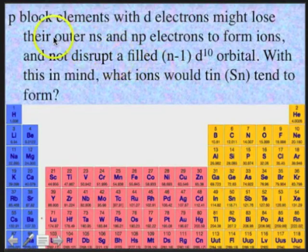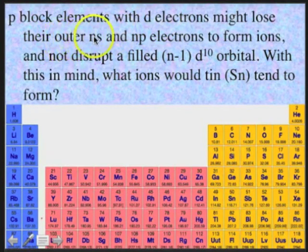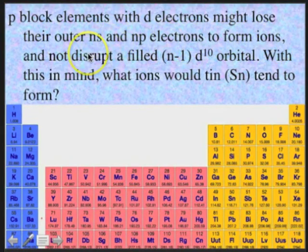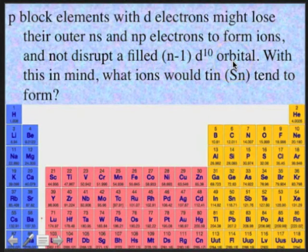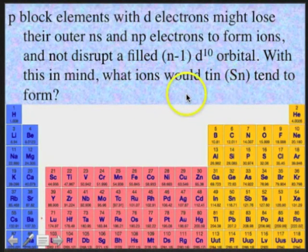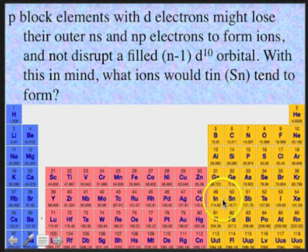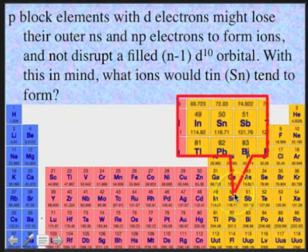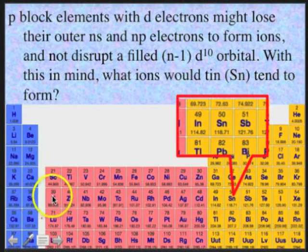Another trend is that p-block elements with d electrons might lose their outer ns and np electrons to form ions and not disrupt a filled (n-1)d10 orbital. With this in mind, what ions would tin tend to form? Tin has a 5s, 4d, 5p situation.